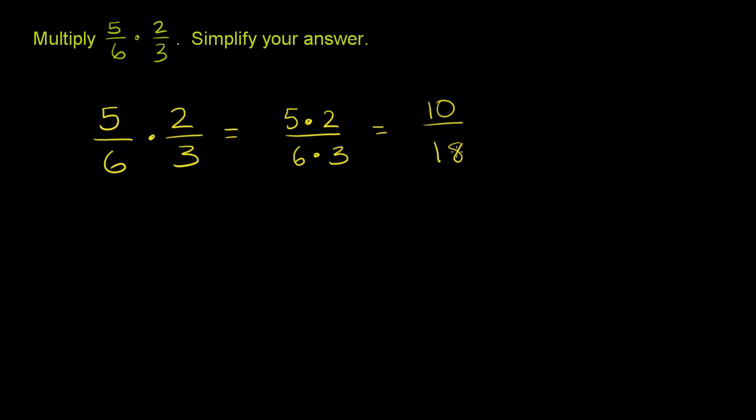But when you look at these two numbers, you might immediately see that they share some common factors. They're both divisible by 2. So if we want it in lowest terms, we want to divide them both by 2. So divide 10 by 2, divide 18 by 2. And you get 10 divided by 2 is 5, 18 divided by 2 is 9.